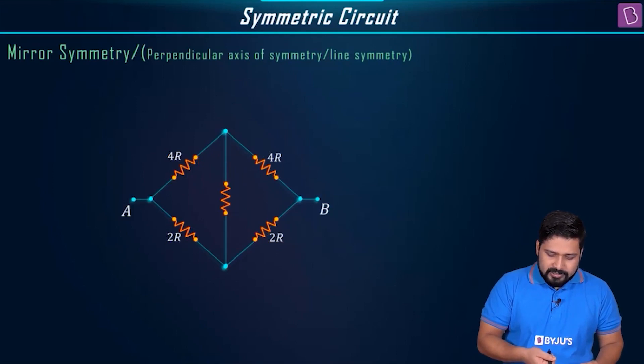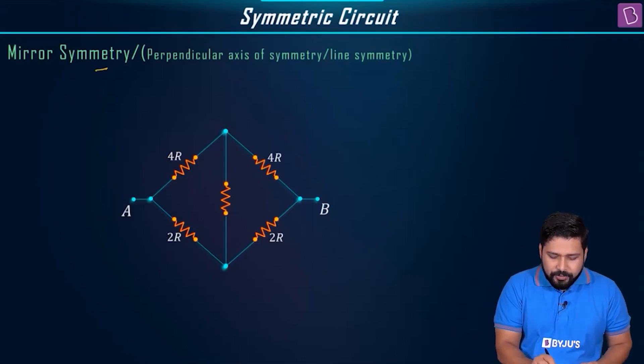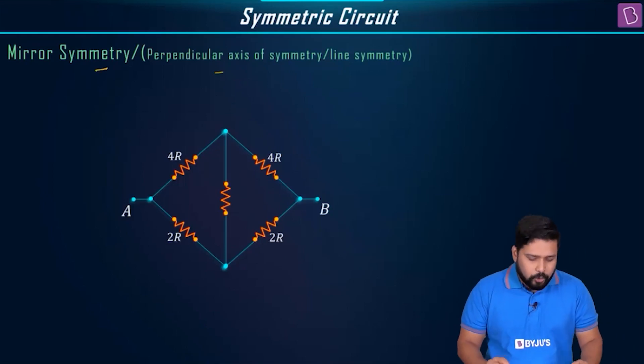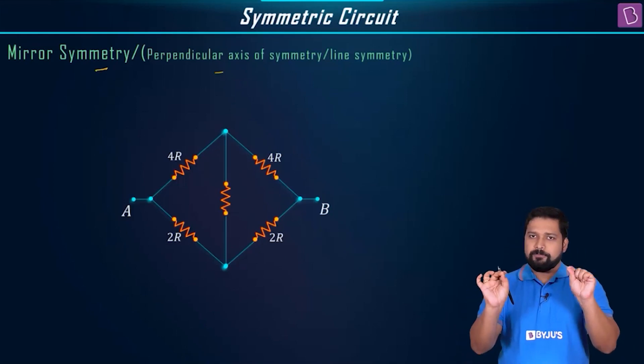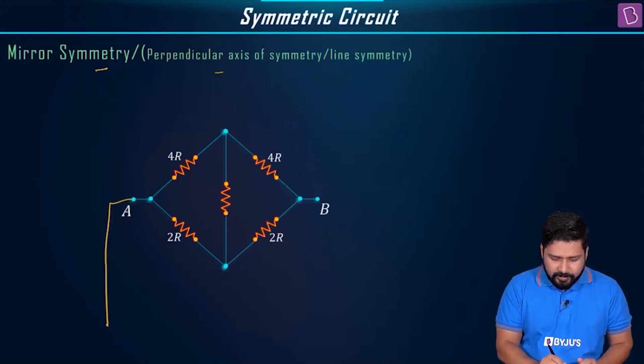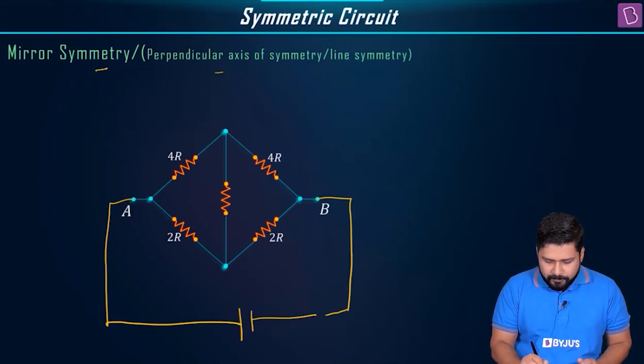Now we are going to solve the same thing by using mirror symmetry or perpendicular axis of symmetry or line symmetry. For this, you need to be very careful. You need to know everything that I'm going to tell you. So you have got two points, point A and point B. First thing is that you just imagine that you have connected it across a battery, imaginary battery like this or a cell.